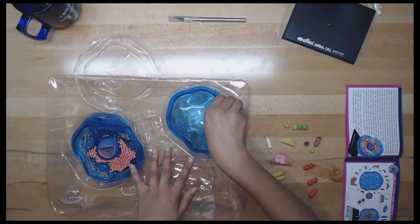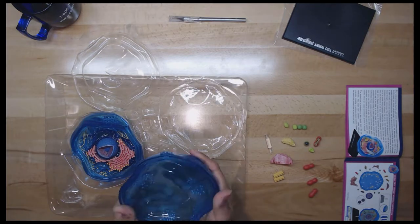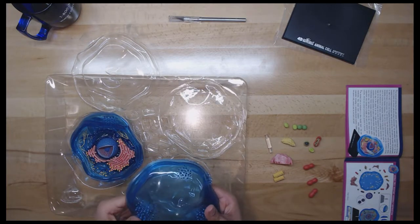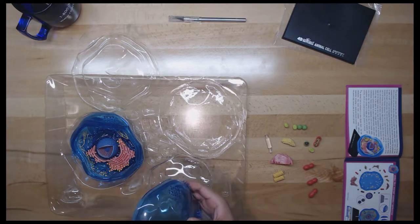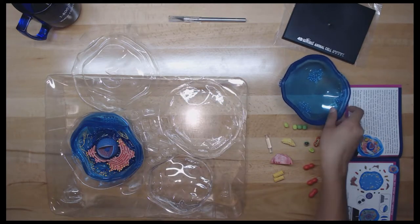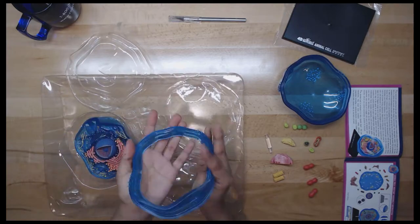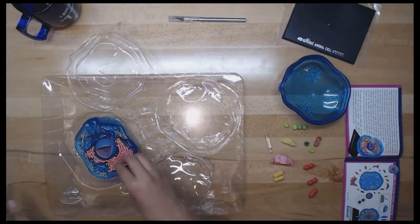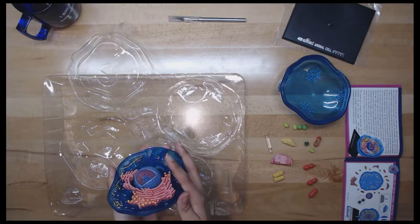Next is the ribosomes. These are packets of RNA and protein. As an essential role in both prokaryotic and eukaryotic cells, it assembles individual amino acids into polypeptide chains of proteins. This process is called translation.